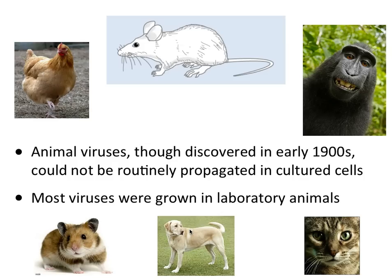Yesterday we discussed that viruses were discovered at the end of the 1800s and early 1900s. But for the first 40 or 50 years of virology research, these viruses could not be studied in cell cultures — they had to be propagated in animals. A whole host of animals were used for propagating viruses. Even today we still use animals to study viruses because we'd like to know how viruses cause disease, and to study disease you can only answer that question in an animal model. But cell culture has largely supplanted the use of animals for growing virus stocks and determining how much virus is present.